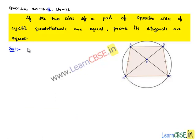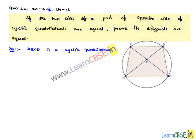Let us consider ABCD a cyclic quadrilateral in which AC and BD are diagonals. It is given that a pair of opposite sides are equal, so let us assume that AB is equal to CD. We need to prove that AC is equal to BD.